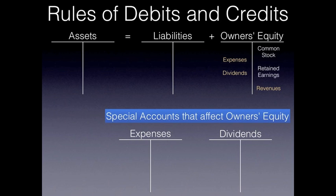Assets go up with debits and go down with credits. So let's think about cash. Cash goes up with a debit and down with a credit.